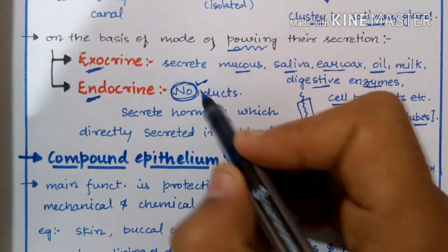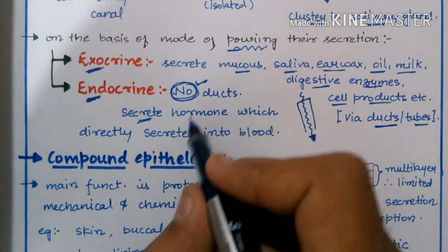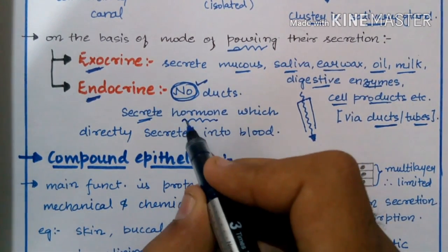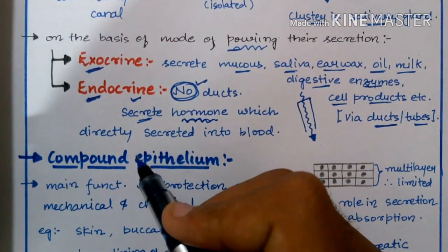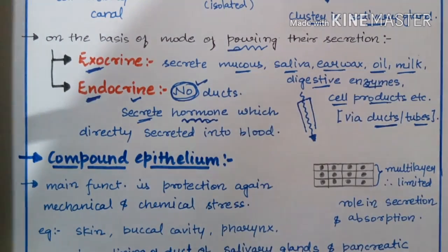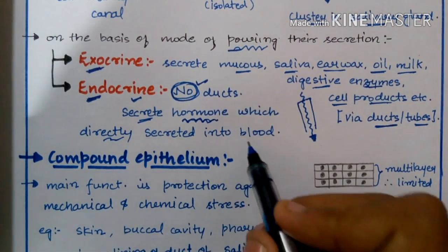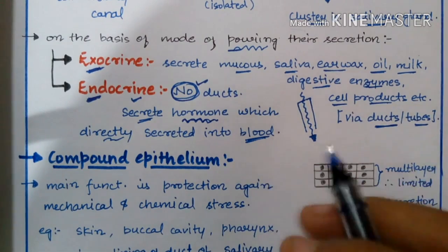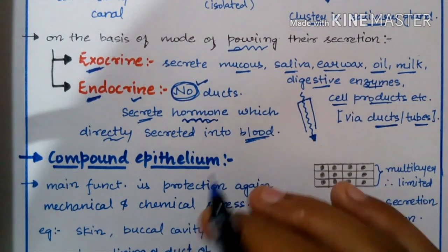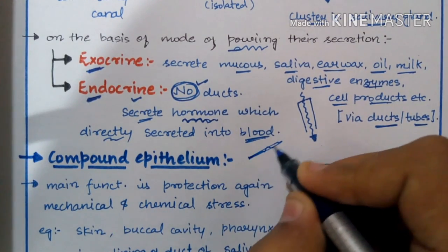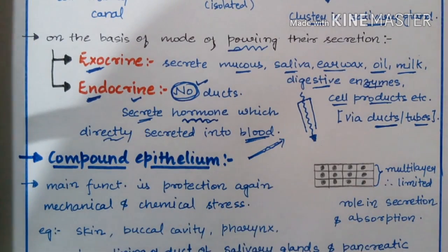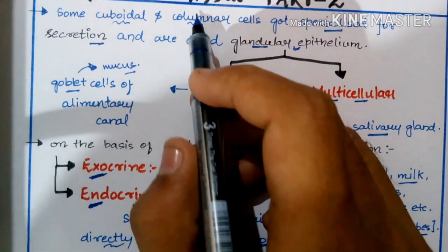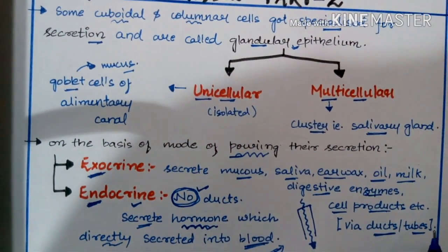For endocrine glands, ducts are absent. Their secretions, known as hormones, are poured directly into the blood. All glands secreting hormones are known as endocrine glands — such as the thyroid gland, parathyroid gland, and hypothalamus. These secrete directly into the bloodstream, by which hormones are carried from one place to another. This is the difference between exocrine and endocrine glands.